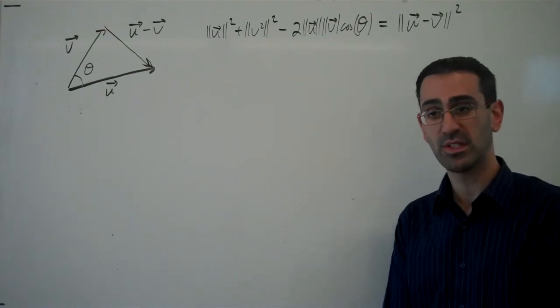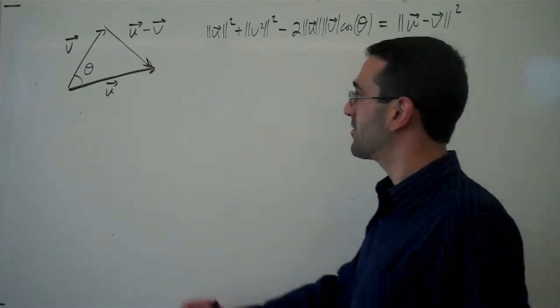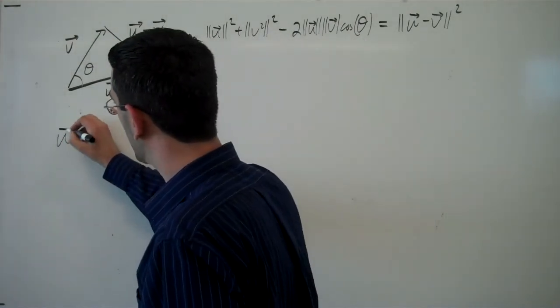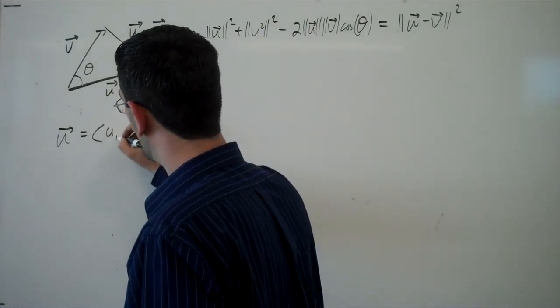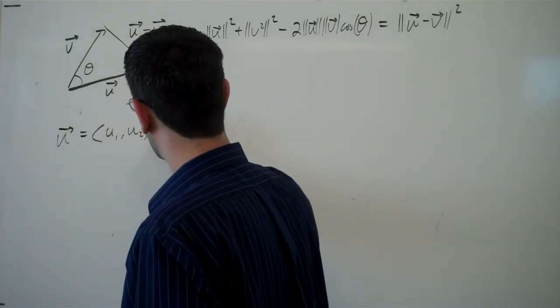Let's imagine that they have three components. Then the vector u would be u1, u2, u3.